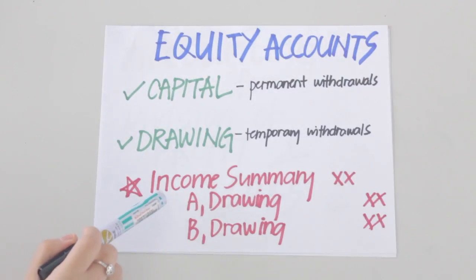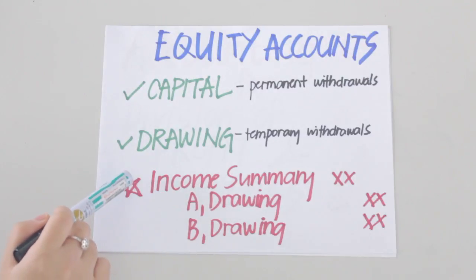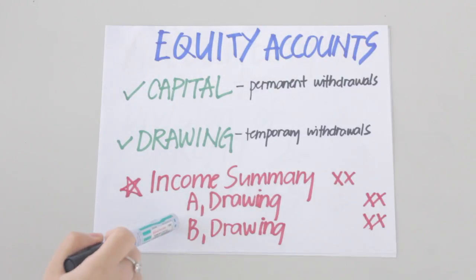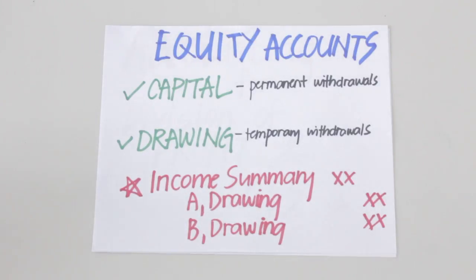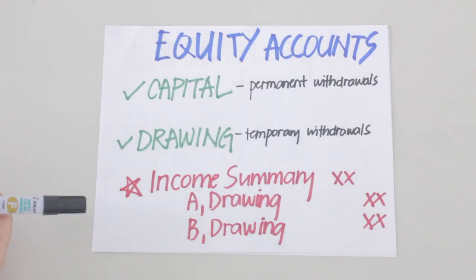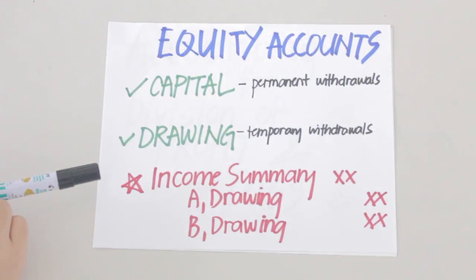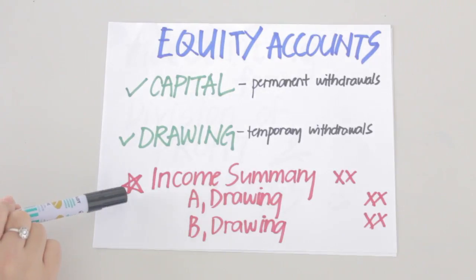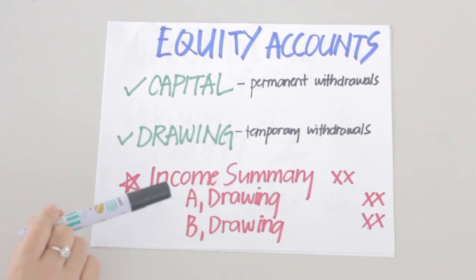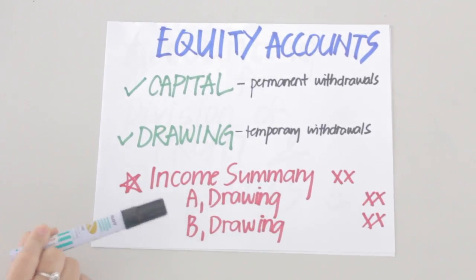For partnerships, a partner's share in net income is recorded by debiting the income summary and crediting their drawing accounts. The entry to record a partner's share in net income is a debit to income summary and a credit to their drawing accounts.